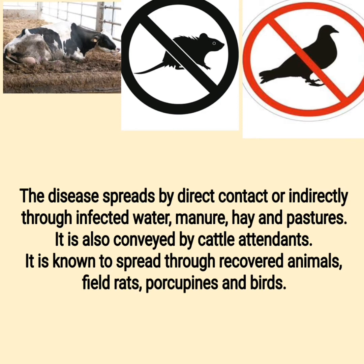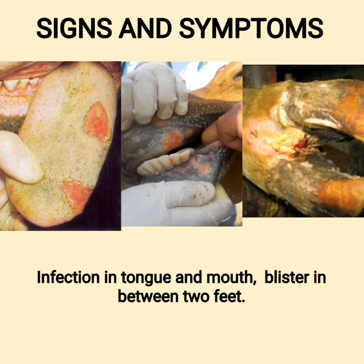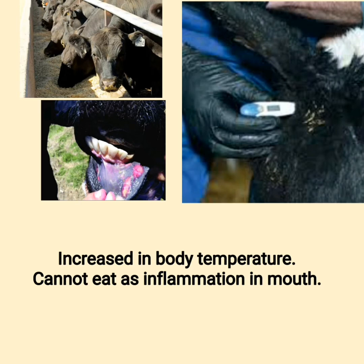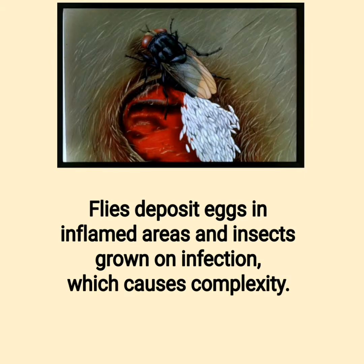It is also conveyed by aerosol. It is known to spread through recovered animals, field rats, porcupines and birds. Symptoms include infection in tongue and mouth, blisters between the feet, increased body temperature, inability to eat due to inflammation in the mouth, and flies depositing eggs in inflamed areas with insects growing on the infection, which causes complications.